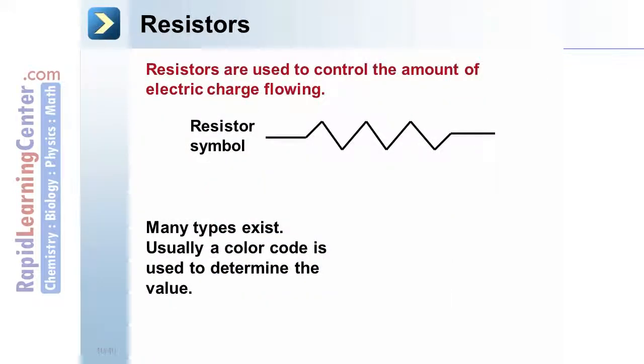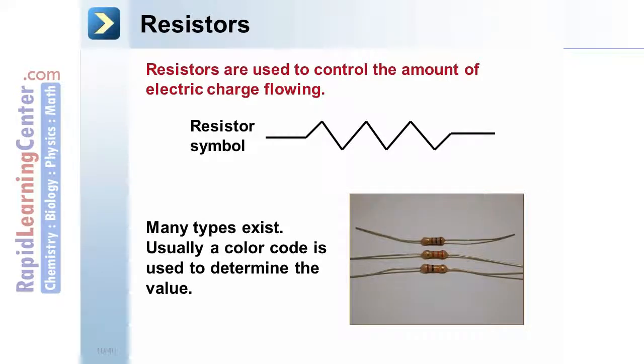Resistors. Resistors are used to control the amount of electric charge flowing. Shown below is the resistor symbol. Many types of resistors exist. Pictured are a few here. Note the colored bands on the resistors. This is a color code that is used to determine the resistance value of the particular resistor. Generally, you won't find numbers or letters printed on a resistor. The color code does this for you.